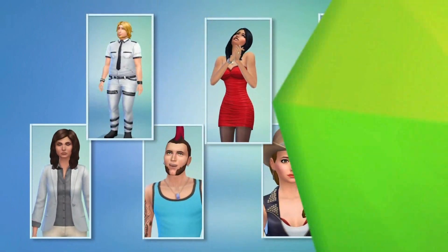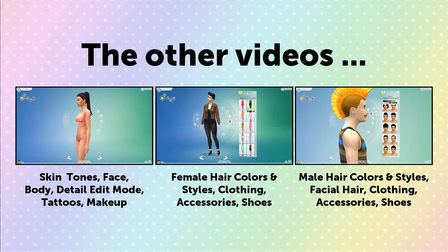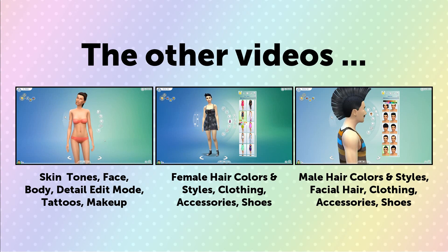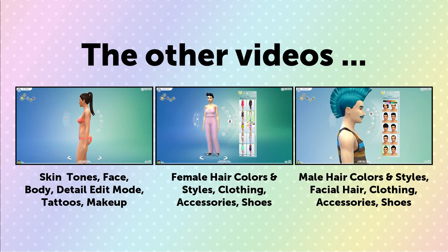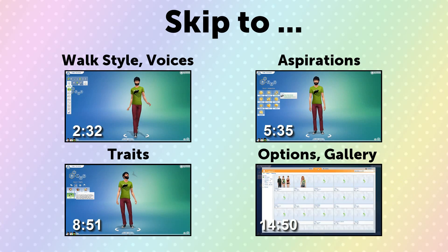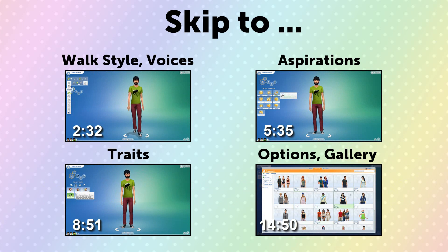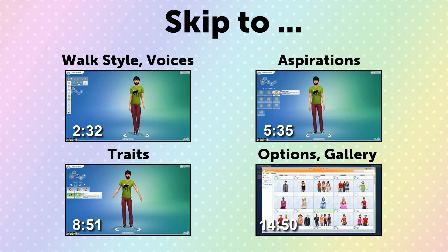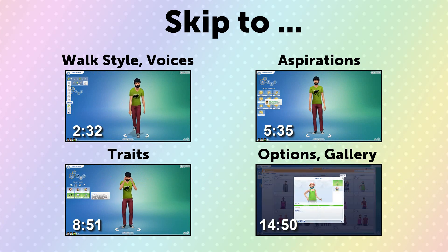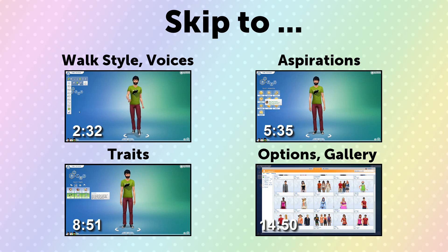This is a four-part mini-series. The first video covers walk style, voices, aspirations, traits, and the gallery. The second covers skin tones, facial features, body shape, tattoos for males and females, and makeup for males and females. Third is female hair, clothing, and accessories. Fourth is male hair, facial hair, clothing, and accessories. These videos are quite long so I'll put times and annotations at the beginning so you can skip around, and also at the end so you can watch the other videos. They'll be linked in the description and there's also a playlist for autoplay.